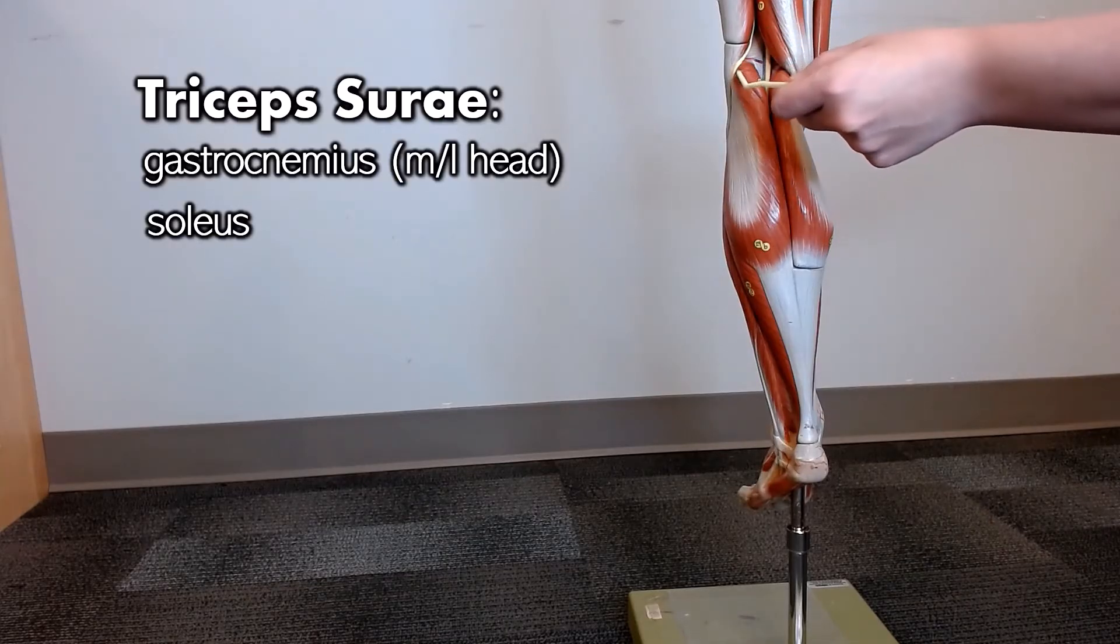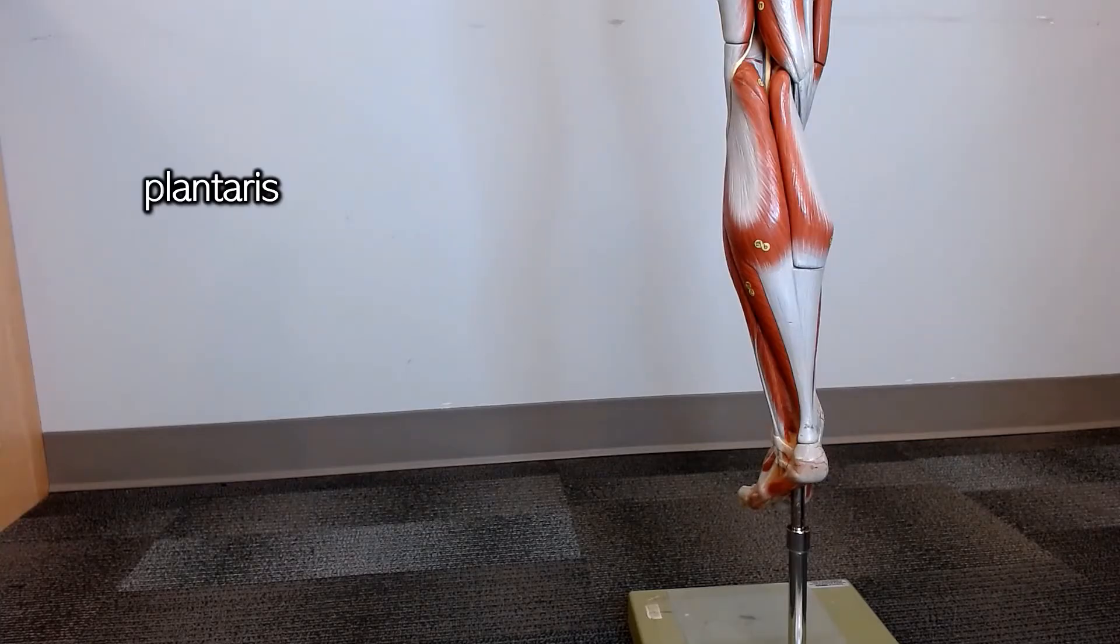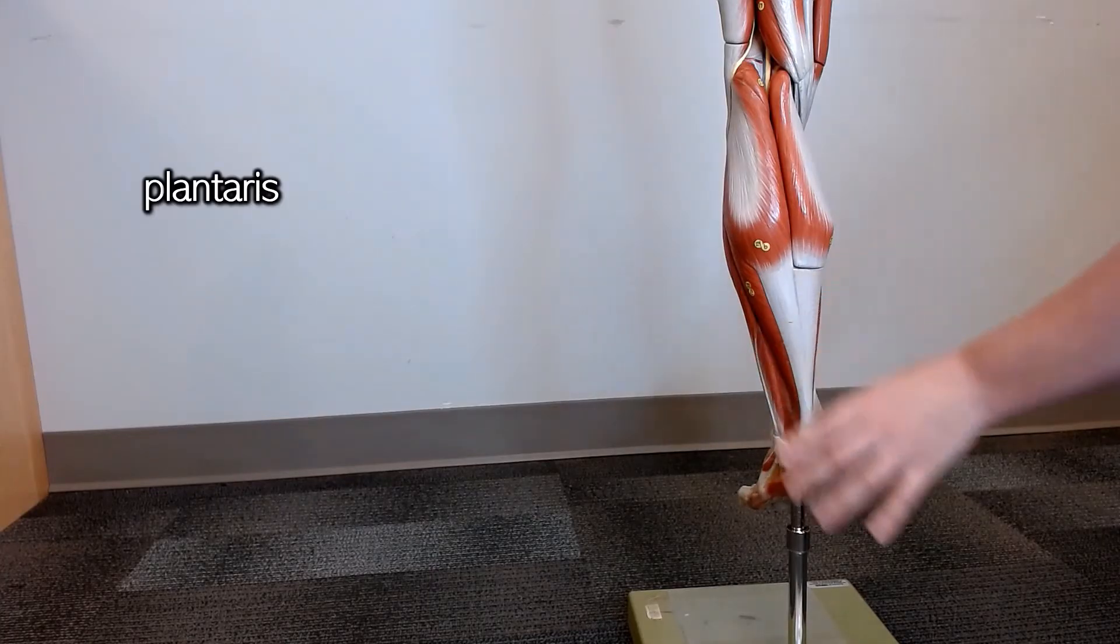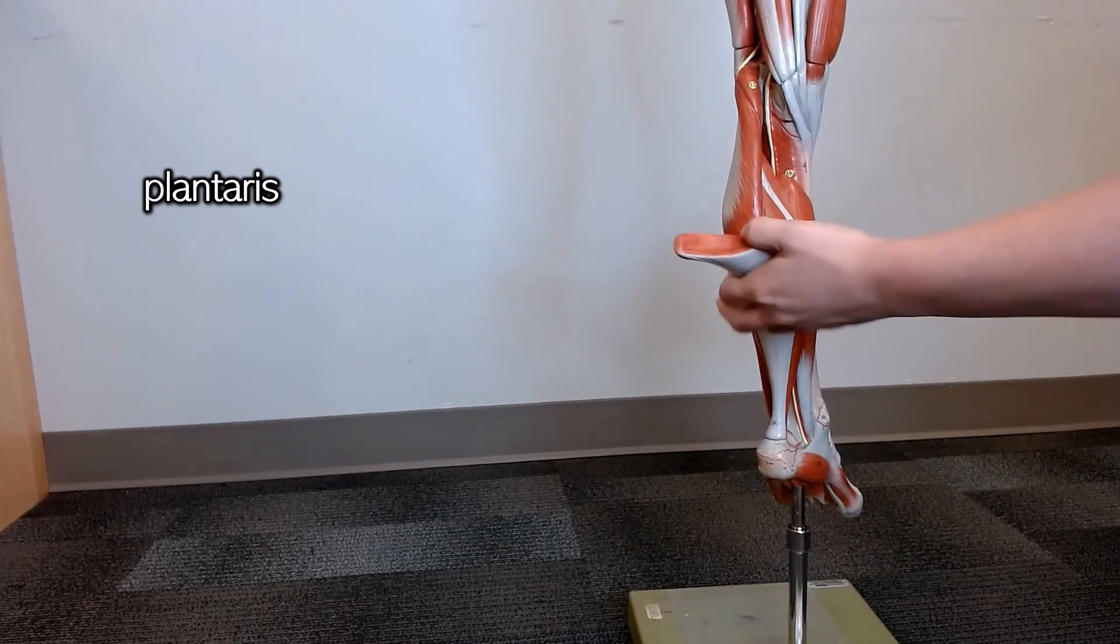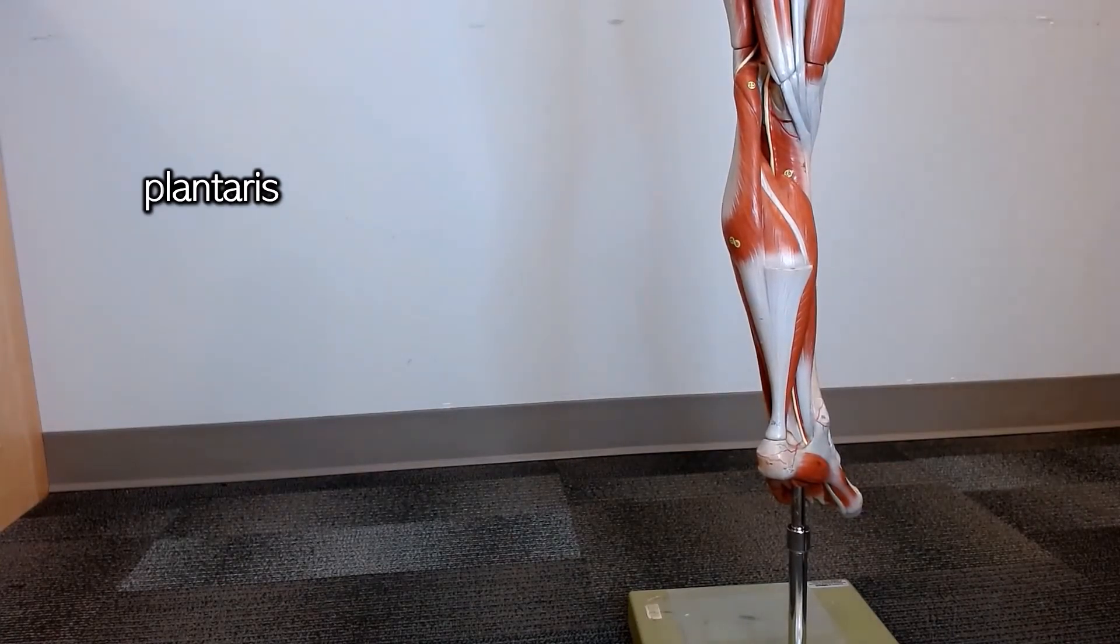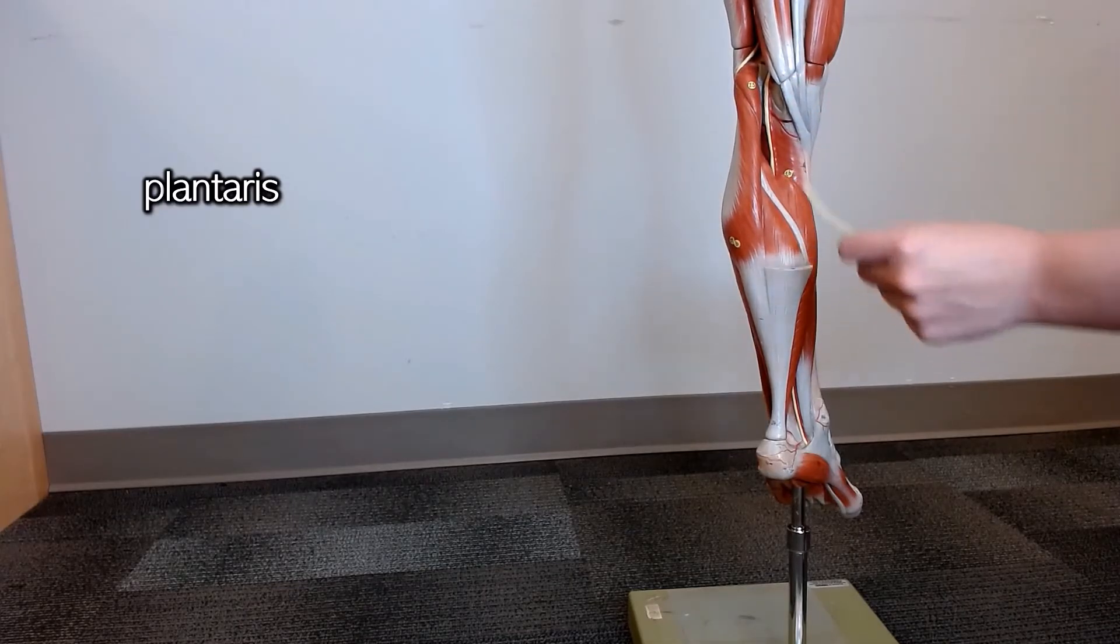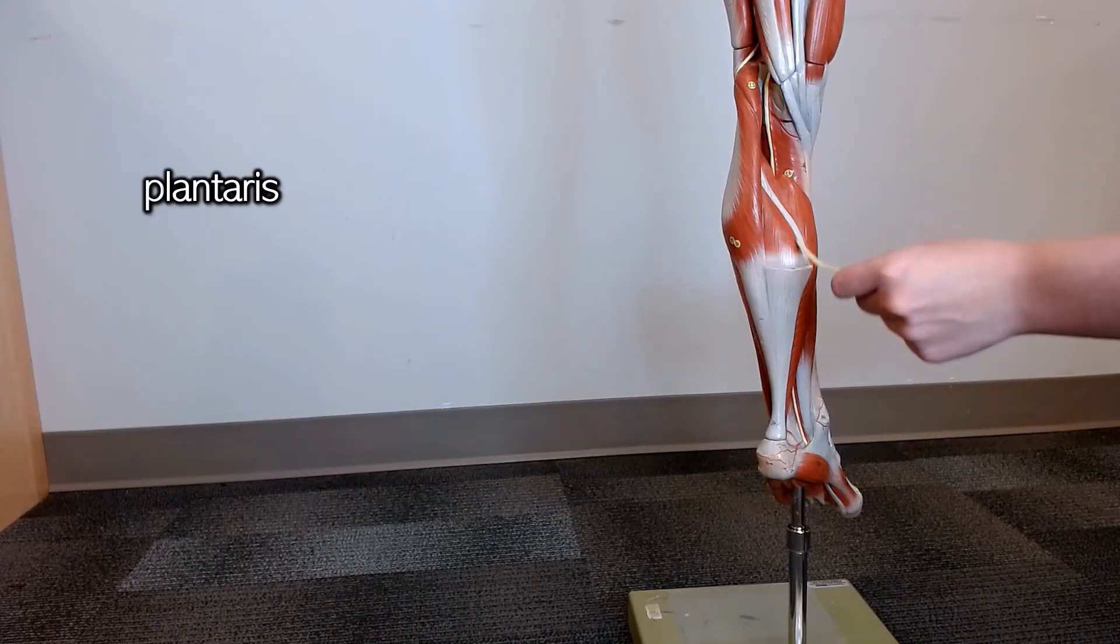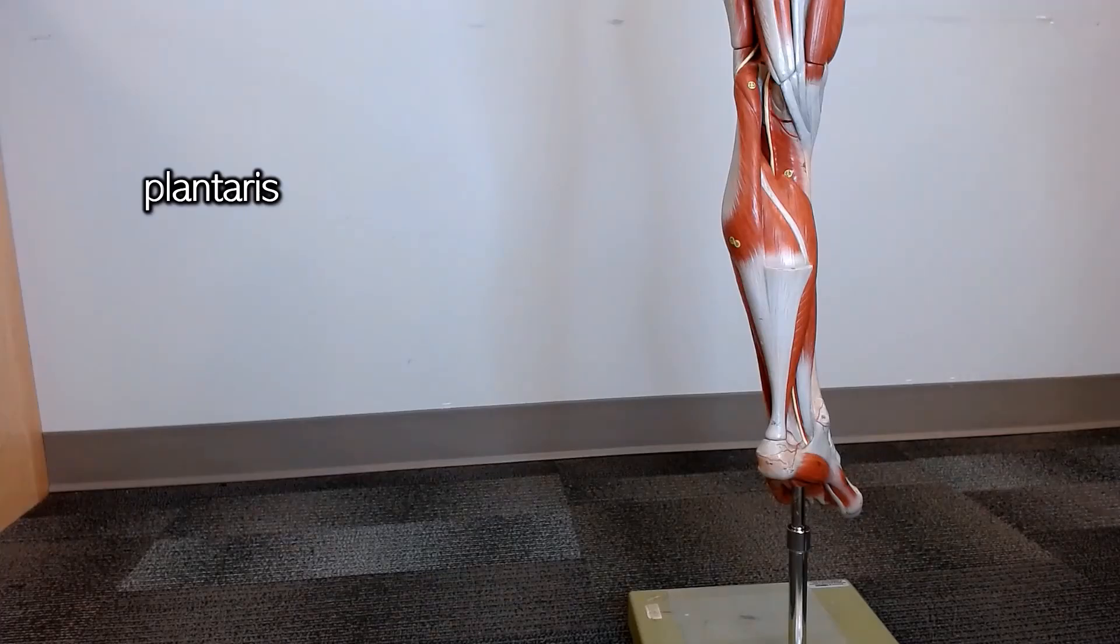The plantaris muscle is wrapping over the top of the lateral head of the gastrocnemius. You can see it much better if you pull off the medial head. The plantaris wraps around to the inside, and it's called the plantaris because eventually it will insert onto the bottom of your foot, which is the plantar region of your foot.